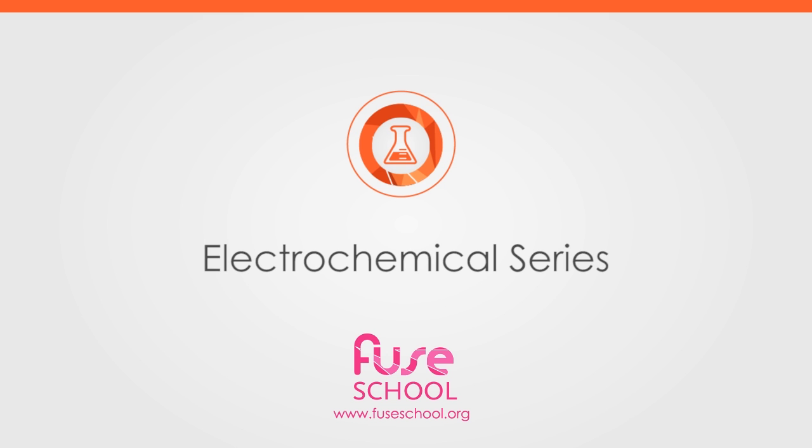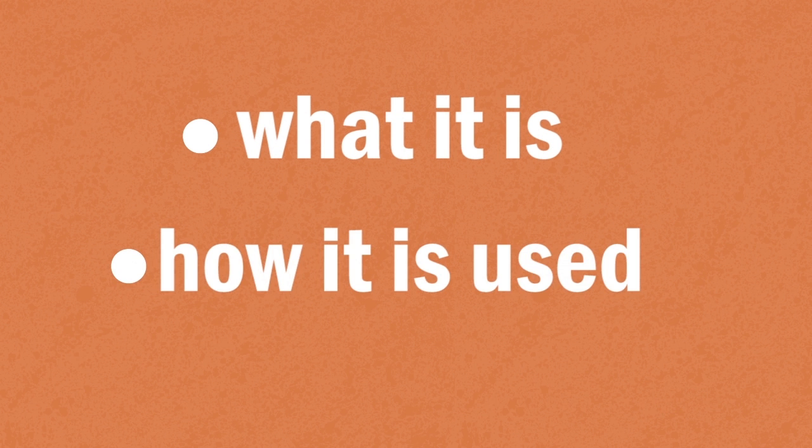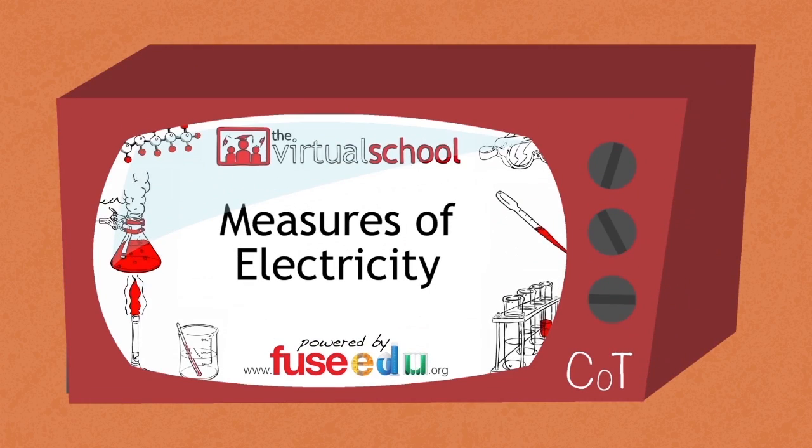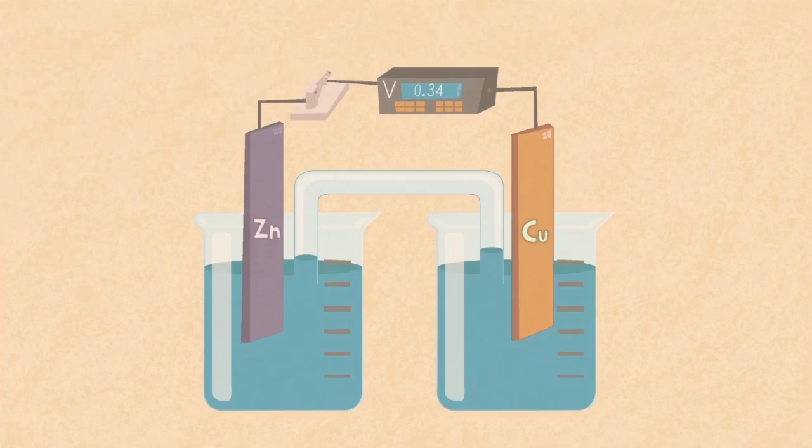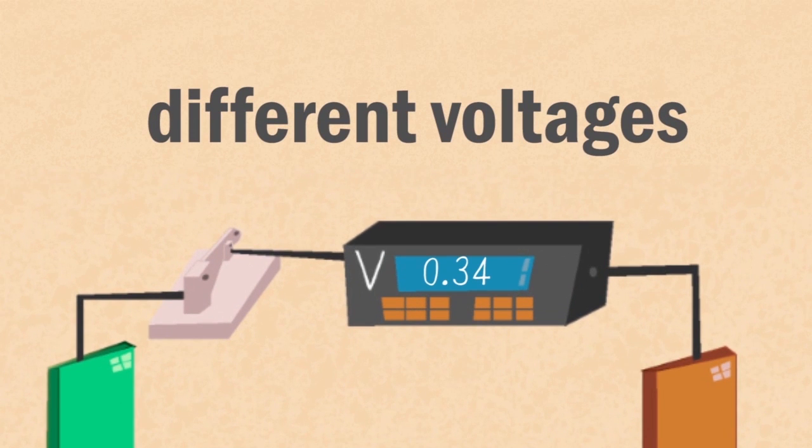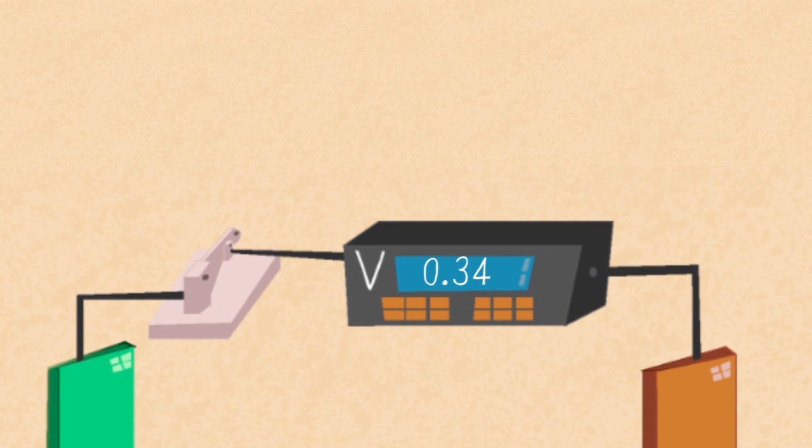In this video we're going to learn about the electrochemical series: what it is and how it is used. In the video Measures of Electricity, we found out that different combinations of metals produce different voltages, and this depends on how strongly the metal could force its electrons to move across the cell.